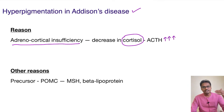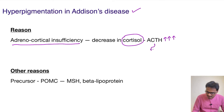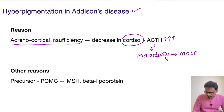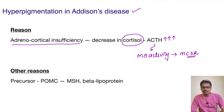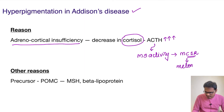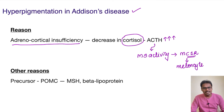So the levels of ACTH go up very high. This ACTH has a special property — it acts like a melanocyte stimulating activity. It acts on specific receptors called melanocortin receptors, specifically melanocortin-1R receptors. Because of this action, the melanocytes are stimulated, leading to hyperpigmentation.